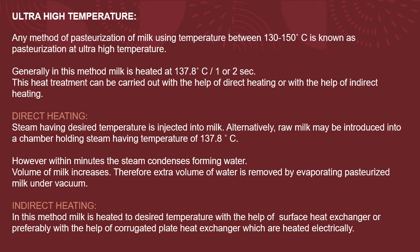UHT heat treatment can be carried out by direct heating or indirect heating. In direct heating, steam at the desired temperature is injected into milk. Alternatively, raw milk is introduced into a chamber that holds steam at 137.8°C. Within a few minutes the steam condenses, forming water, increasing the volume of milk. Therefore, the extra volume of water is removed by evaporating the pasteurized milk under vacuum.